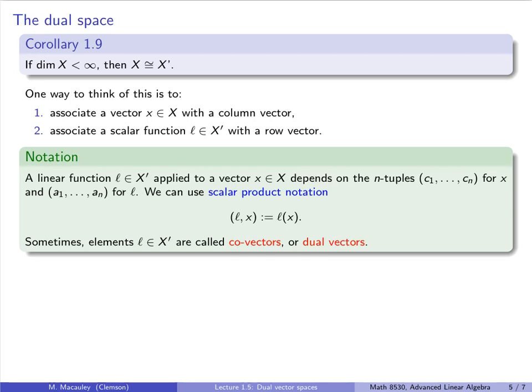Now, this you may have seen to denote inner products or dot products in other contexts, and that's one reason why we like it. So we'll talk about this more later. But for now, instead of calling elements in the dual space as scalar functions, we can call them co-vectors or dual vectors.